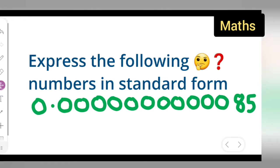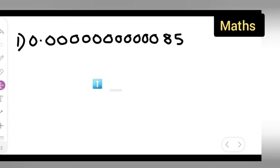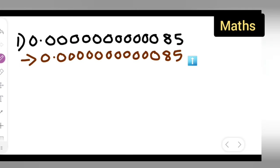So let us express this following number in standard form. First take down the question and then write down 0.11 zeros and then 85. Let me do it in stepwise order. First write down 0, point, 11 zeros: 1, 2, 3, 4, 5, 6, 7, 8, 9, 10, 11 zeros are there, 85. So what I have done over here is I have written this as it is.